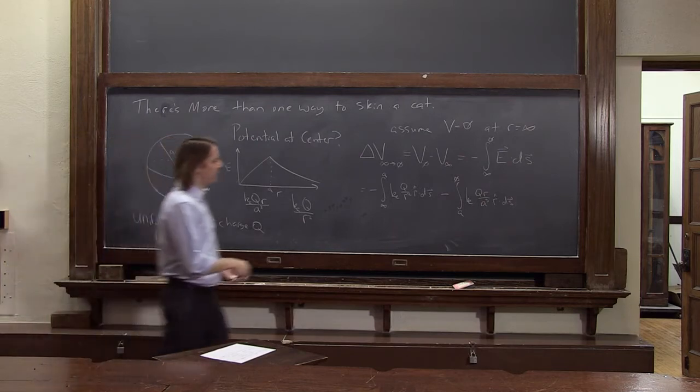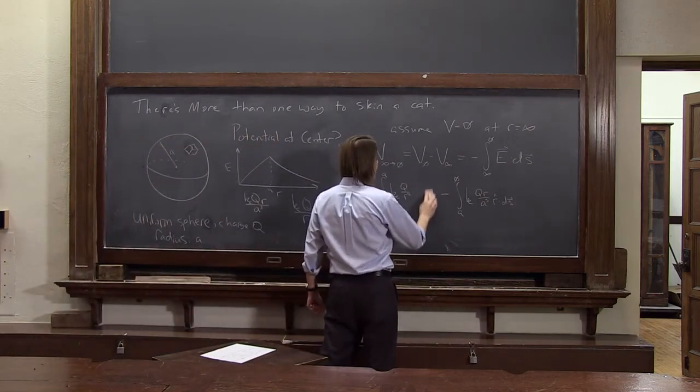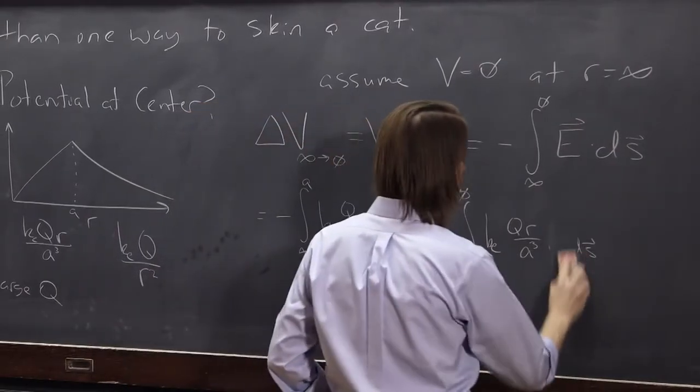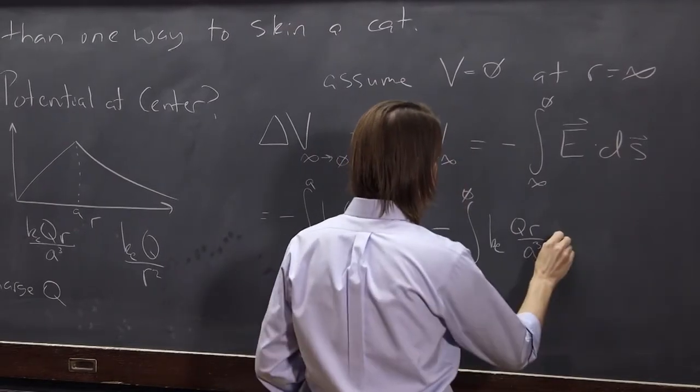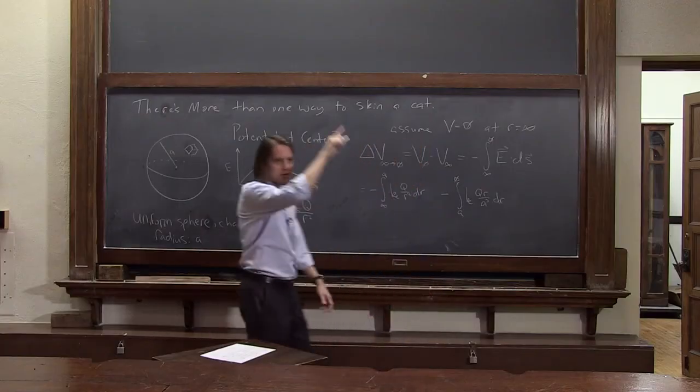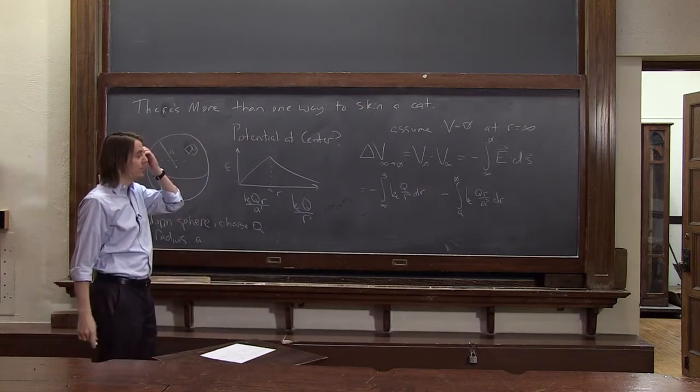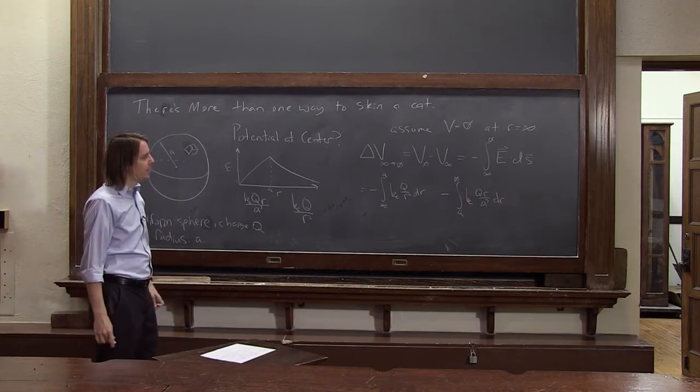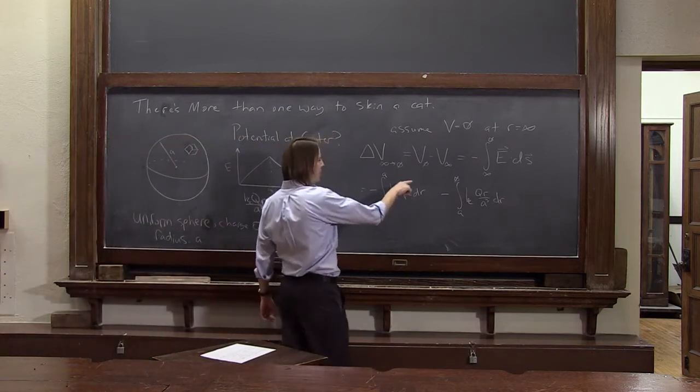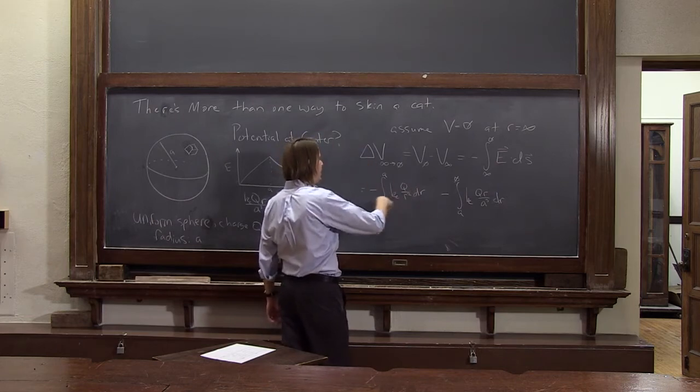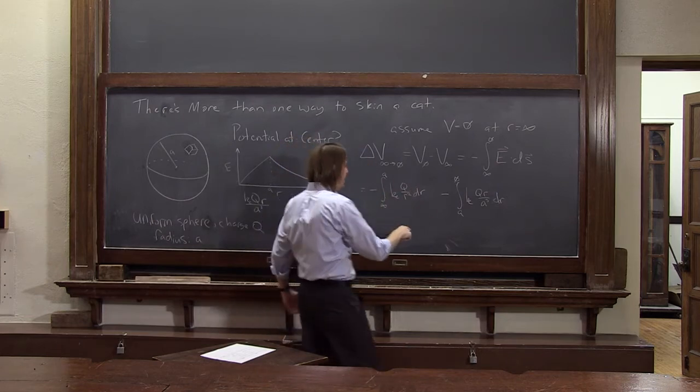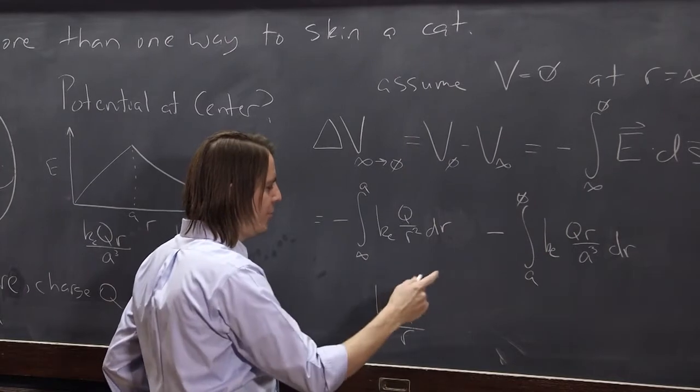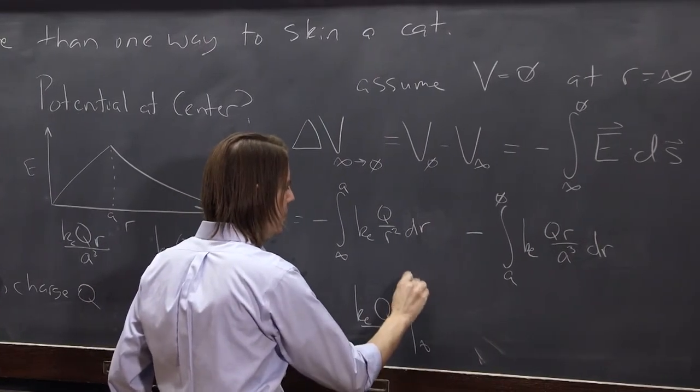Well, one thing that'll speed us up is that R hat dot DS, remember that's just DR. Everything's spherically symmetric, so we can just write those as DR. R hat dot DS just picks off the changes in radius, because in this case, changes around the circle don't matter. And now, we just have to do the integrals. This, we saw before, that's to the R to the minus two, becomes R to the minus one. You divide by the minus, it cancels that minus, and you get KEQ over R, same as when we did a point charge, from infinity to A.